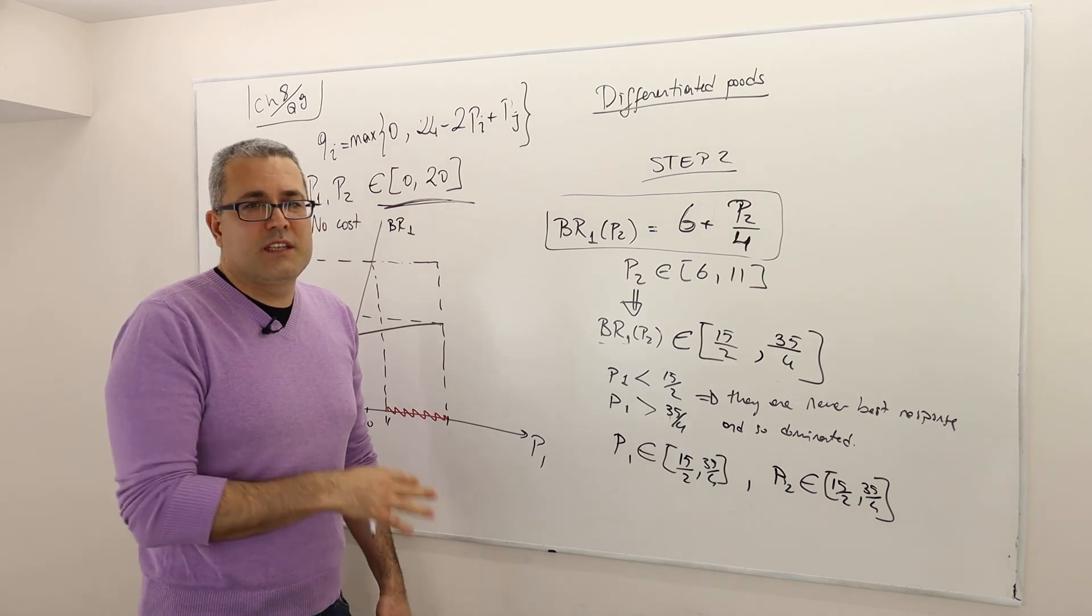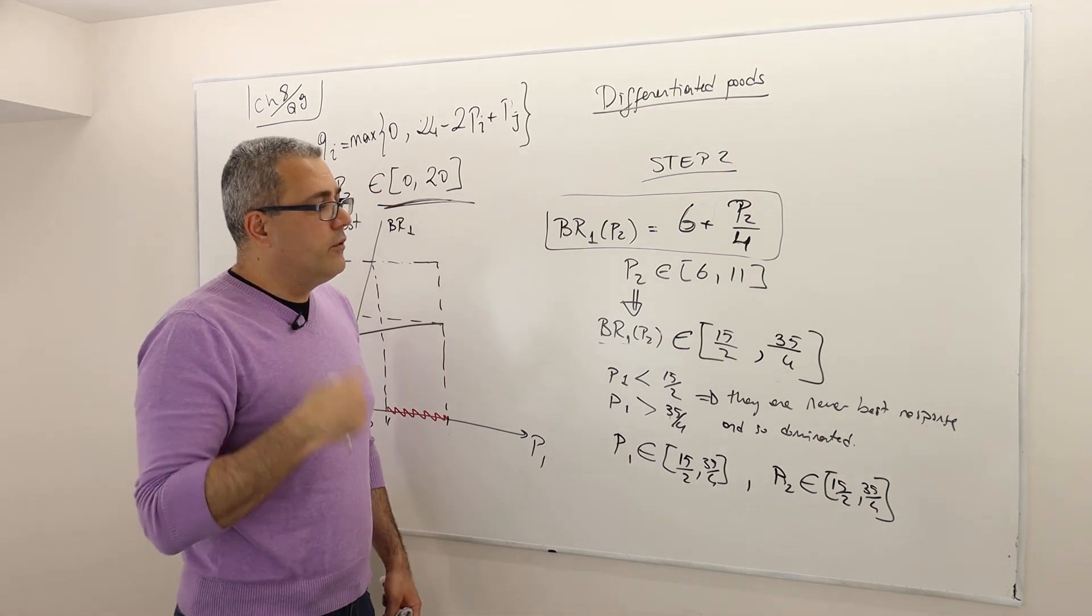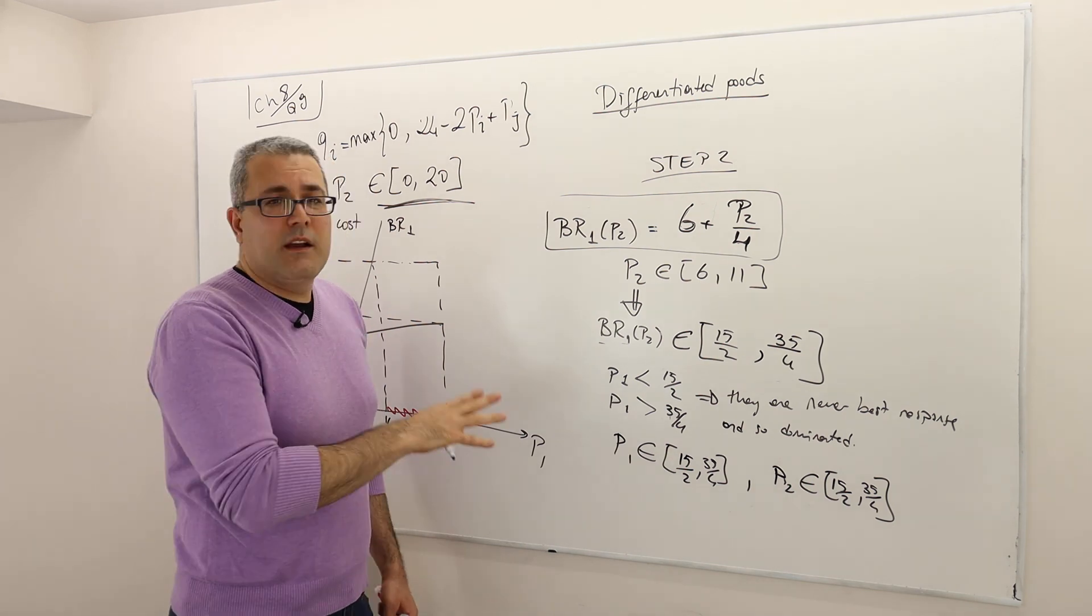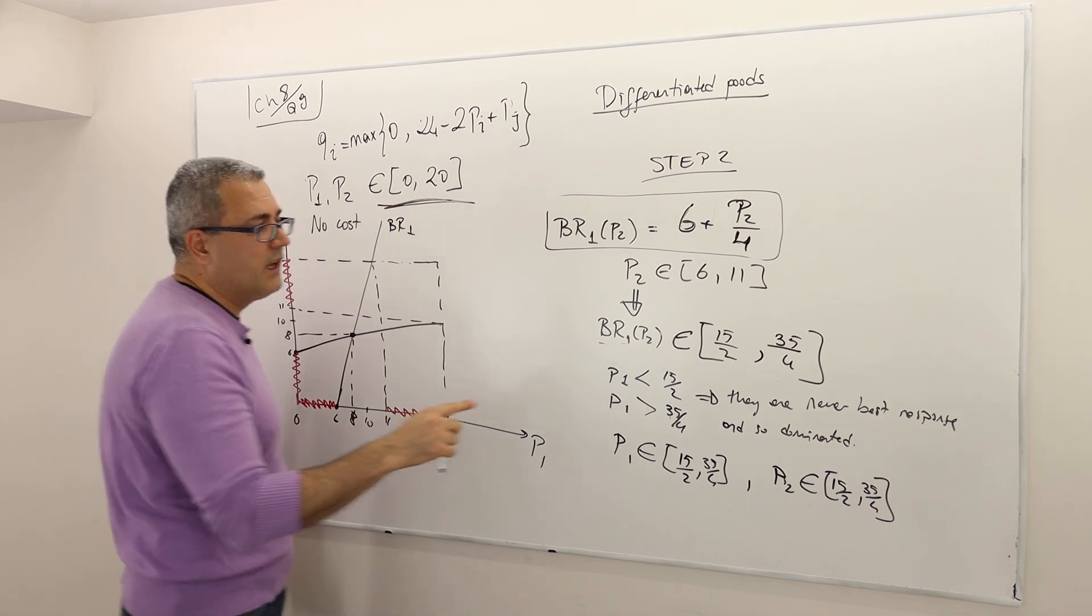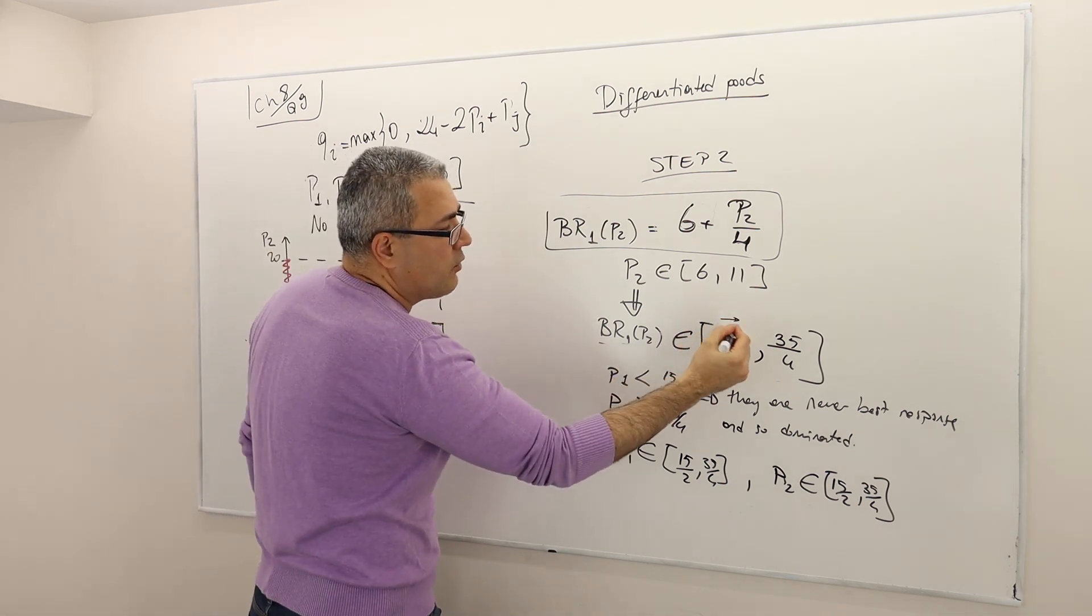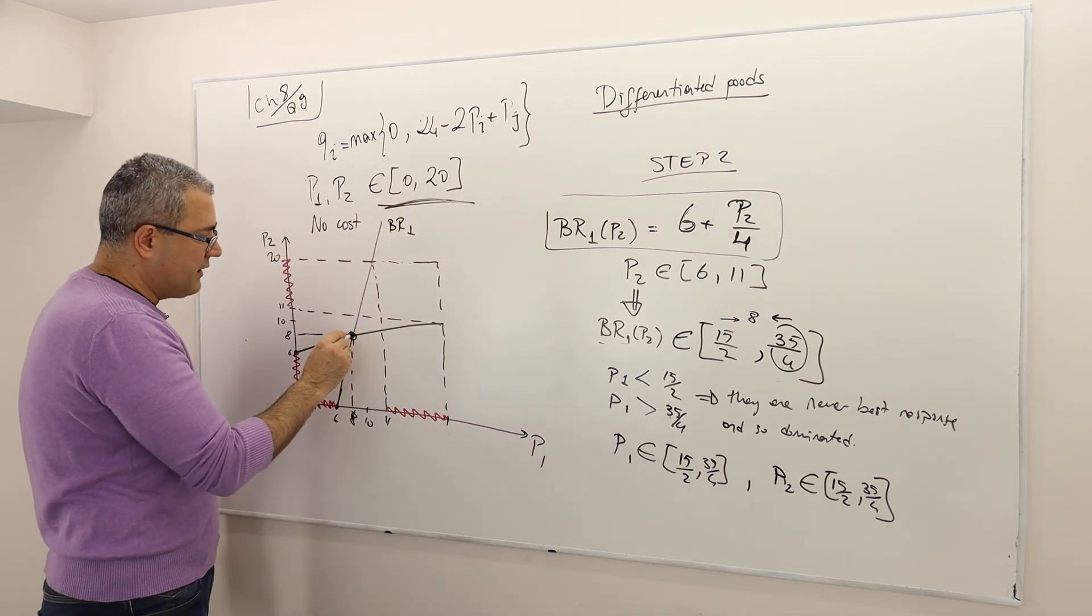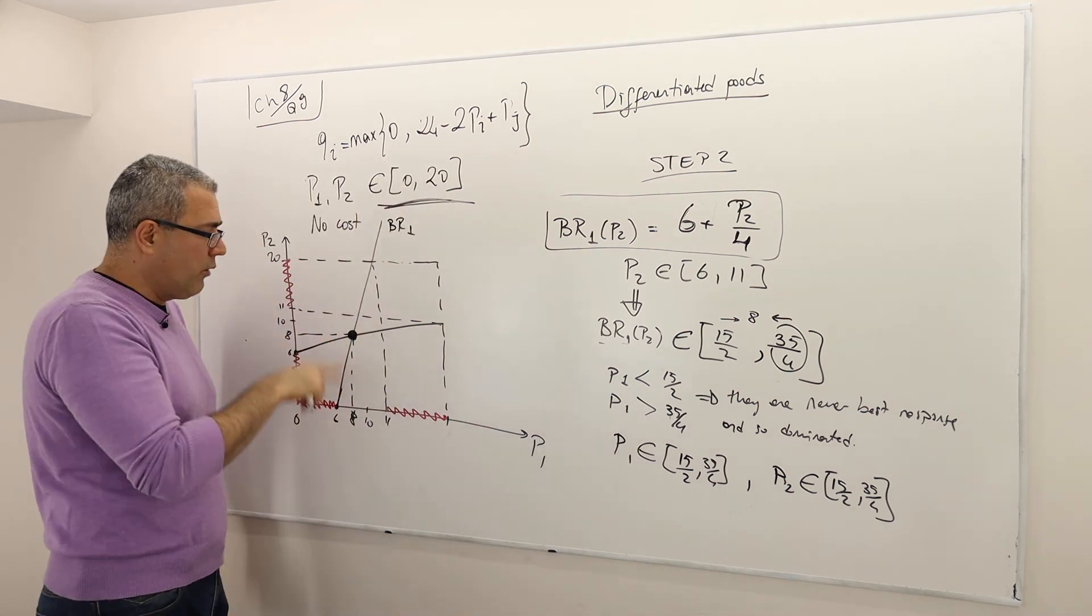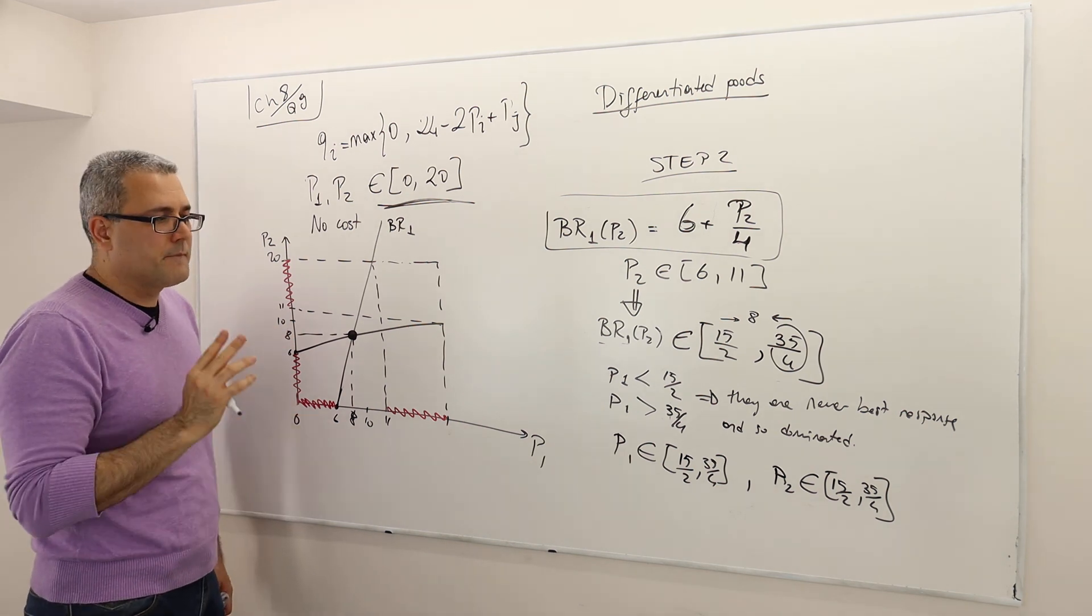Should I stop there? Well, actually, no. You can keep going, and if you keep going, I'm not going to mathematically prove it, but you don't really have to. You'll see this number is going to get closer and closer to 8. This number will also get closer and closer to 8. So this point is eventually going to be the only rationalizable strategy of this game.